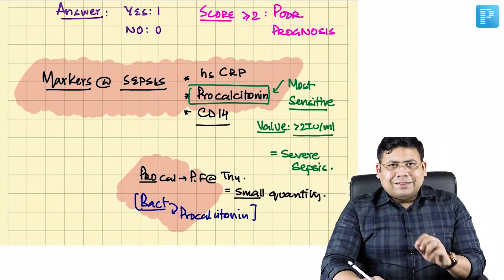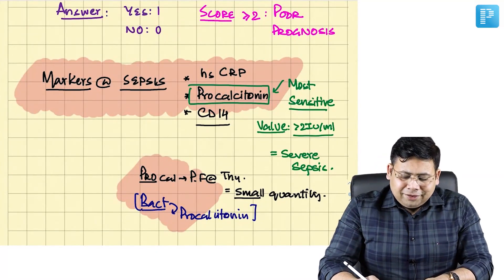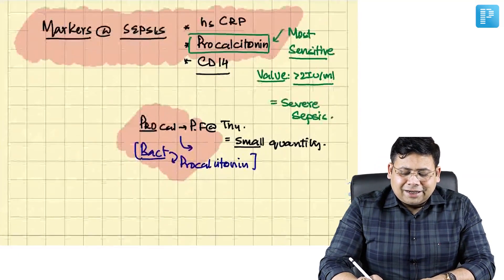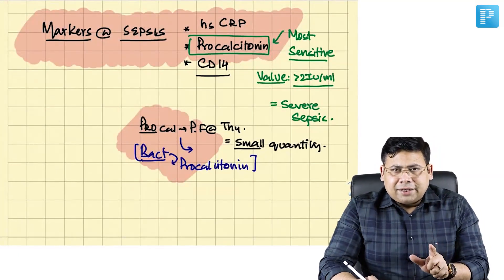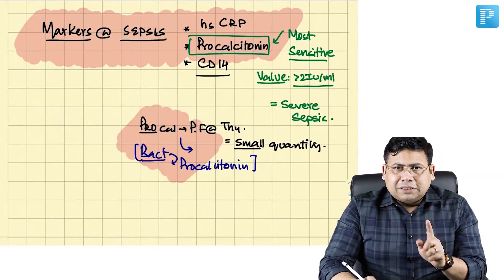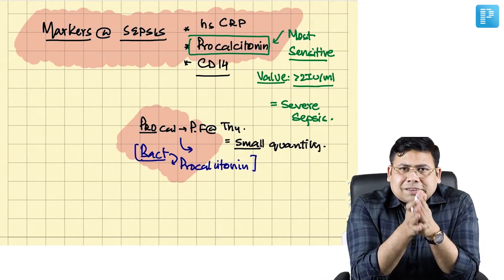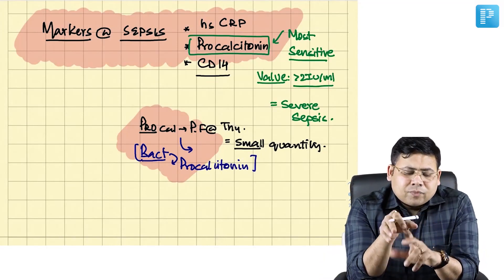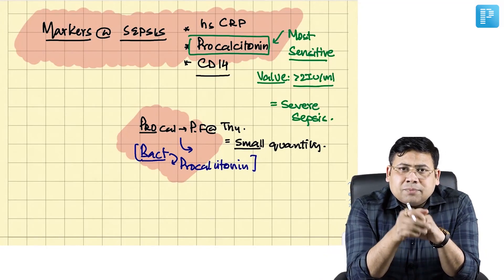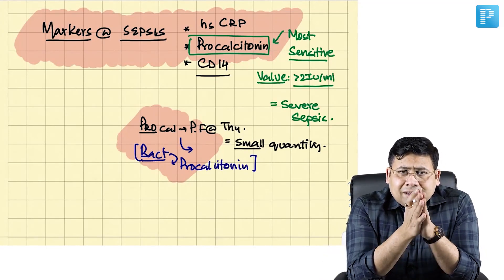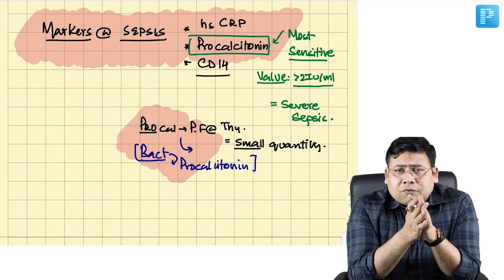In a patient whose procalcitonin levels are elevated, this indicates that yes there is a bacteria, because the only alternate mechanism by which the body can synthesize this procalcitonin is the bacteria. Hence, procalcitonin is considered as a standard marker for sepsis.